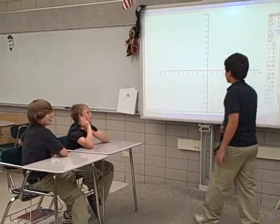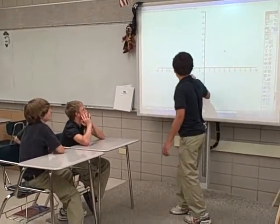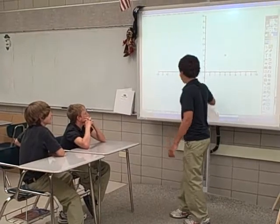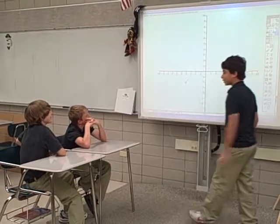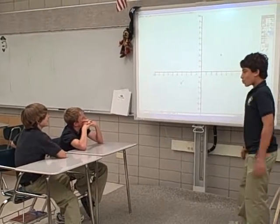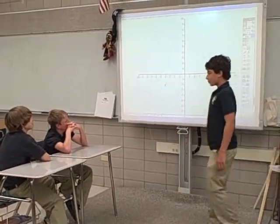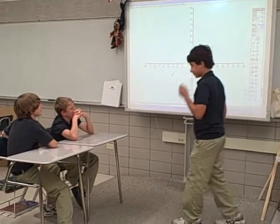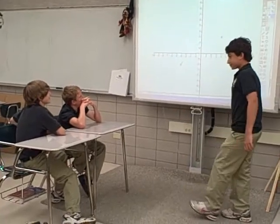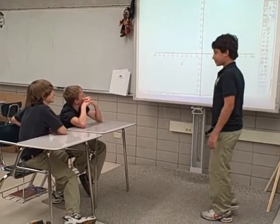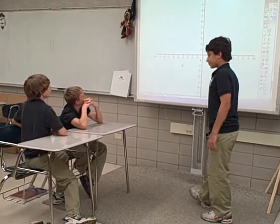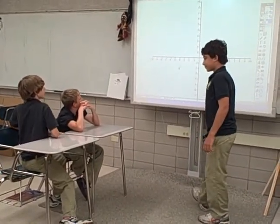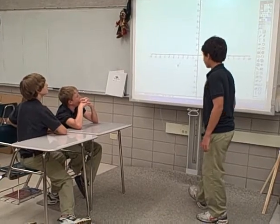Yes. Clay, can you tell me that fly on the grid? Negative four, negative two. Why? Because I started with the x-axis and counted four, and went down two.